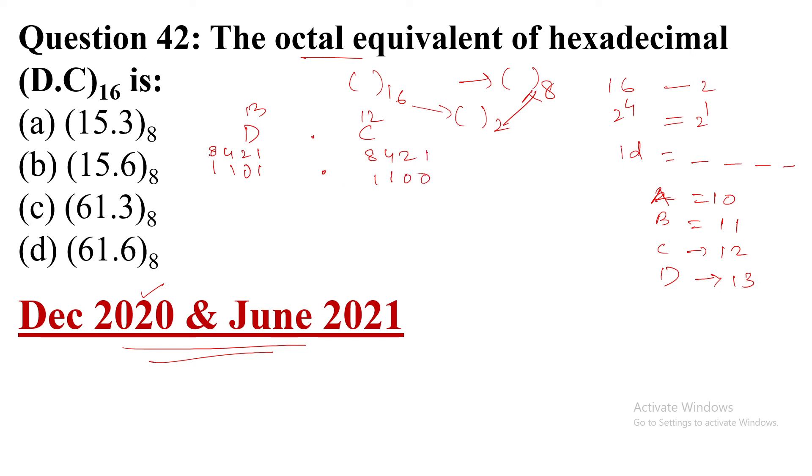Now we will convert to octal. Put two zeros here and one here. This is 1, 4 plus 1 is 5 point. This is 1, 2, 4 - 4 plus 2 is 6. And this is 0. So 15.6.